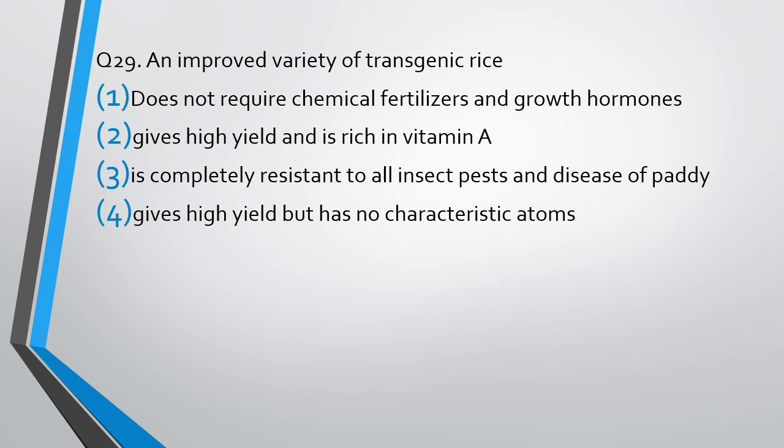Question number 29. An improved variety of transgenic rice: does not require chemical fertilizer and growth hormone; gives high yield and is rich in vitamin A; is completely resistant to all insects, pests, and diseases of paddy; or gives high yield but no characteristic atoms. The correct answer is option 2 — gives high yield and is rich in vitamin A. Another related question type involves night blindness in developing countries, where golden rice would be the advised solution. Night blindness is caused by deficiency of vitamin A, and golden rice is a transgenic variety of rice rich in vitamin A, so providing golden rice can overcome the problem of night blindness.